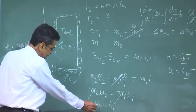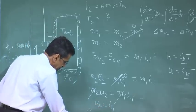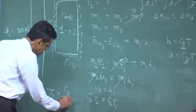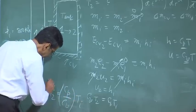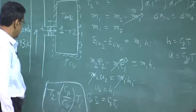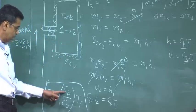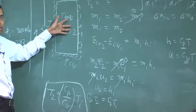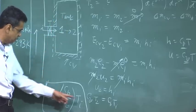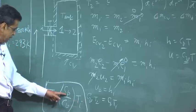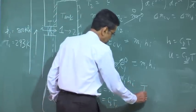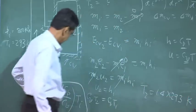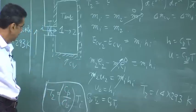Therefore, since u2 equals hi, we can write cv times T2 equals cp times Ti. This gives the general expression T2 equals (cp over cv) times Ti. For air, the ratio cp/cv is 1.4, so T2 equals 1.4 times 293 K. This is the general expression: when an initially evacuated tank is charged adiabatically, the final temperature is always the ratio of specific heats times the supply line temperature.